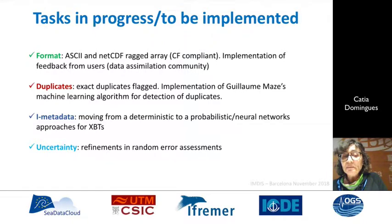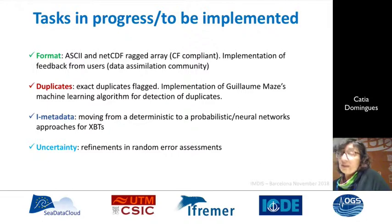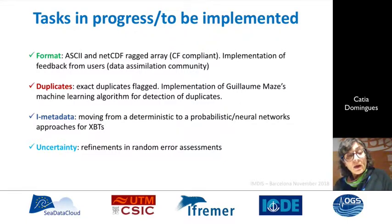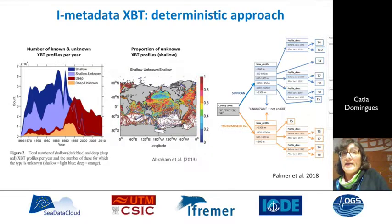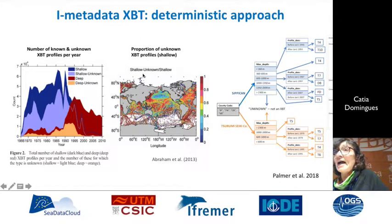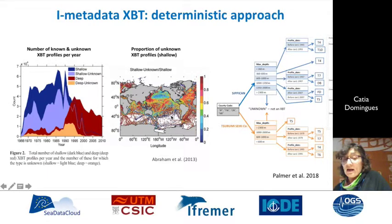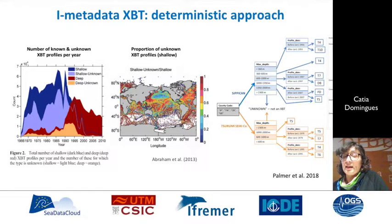For intelligent metadata, we are moving from a deterministic approach to a probabilistic approach and also using neural networks. We are initially tackling instruments related to XBT measurements. With all the information from the intelligent metadata refining, we can also refine the uncertainty errors. A large fraction of the historical data set comes from an instrument called XBT. These are subject to bias, and when they were put into the global database many of them lack metadata — as you can see, the red patterns here denote where we have XBT profiles but no metadata.